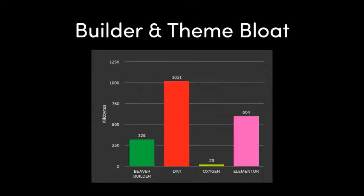One last thing before we get started: let me plug Oxygen, the visual builder made by my company. If you don't want to build a website with bloat on it, start with Oxygen, because a blank page with Oxygen only has 23 kilobytes loaded. Whereas a blank page with Beaver Builder starts at 325 kilobytes, with Divi nearly a megabyte, with Elementor 604 kilobytes — and these numbers are without jQuery and without Google Fonts, just to be totally fair. You're starting with big numbers using those other tools.